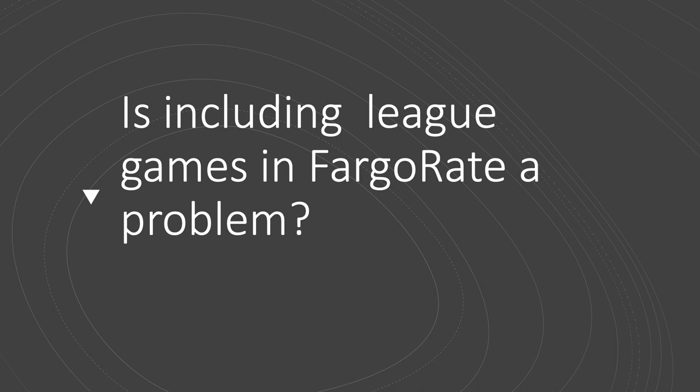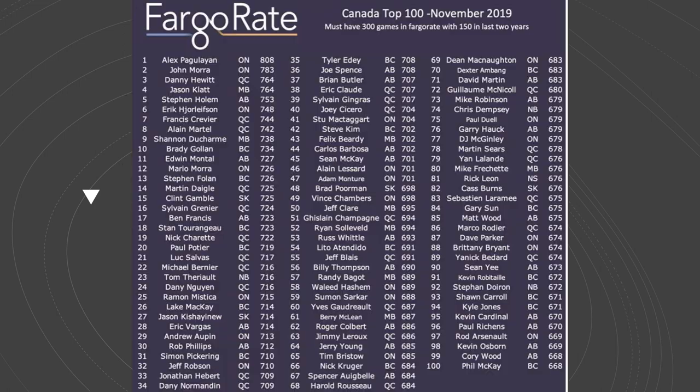Look at the recent International Nine Ball Open. The top 16 entrants by Fargo rating were all in different groups of 8 in the 128-player bracket. In fact, the top 24 players by Fargo rating were all in different groups of 4 and couldn't meet up until at least the third round on the winner's side. Coincidence? Sure, could be.